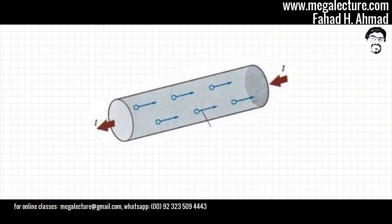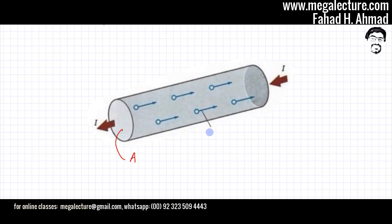So, let's quickly have a look at this wire. There's this small piece of wire and this is the cross-sectional area A. V is the velocity of one of the electrons — this is V which we have described. What is velocity? It's the distance covered per second.